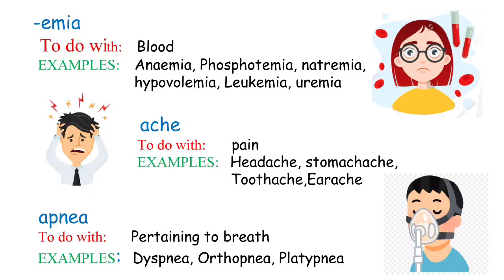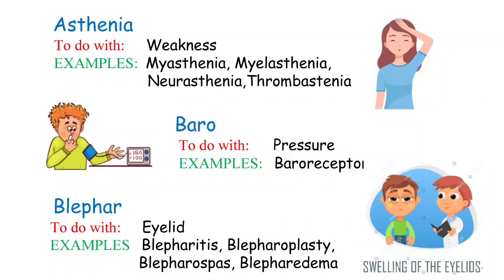The next term is 'asthenia.' The prefix 'a' means without, so asthenia means weakness or poor strength. Whenever you hear 'asthenia,' picture a girl feeling low in energy and tired. Common examples include myasthenia — loss of muscle strength, as in myasthenia gravis.